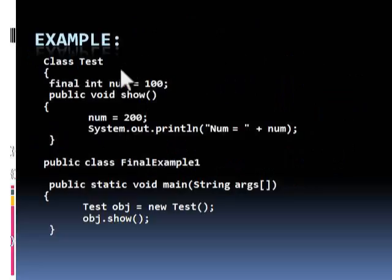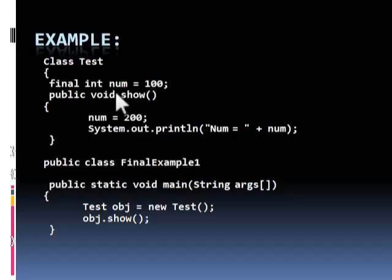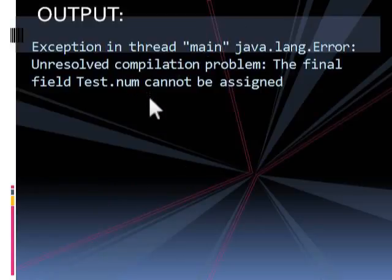Example: first, create a class. This is the final variable. The public method show is used to try to change the value of the final variable. A test object is created as an object of the test class and the method is called. Output: the final field test.num cannot be assigned.